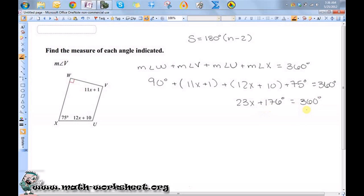If I subtract 176 from both sides I'll get 23X is equal to 184. And then if I divide both sides by 23 I'll get X is equal to 8.